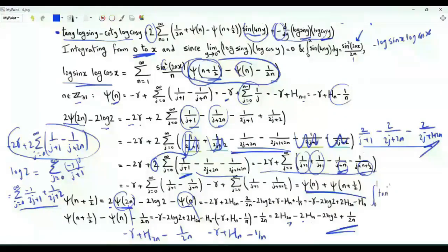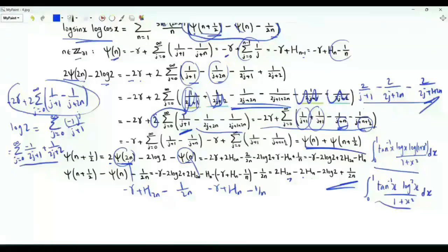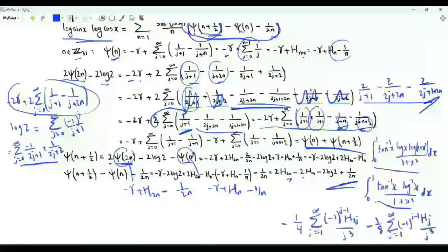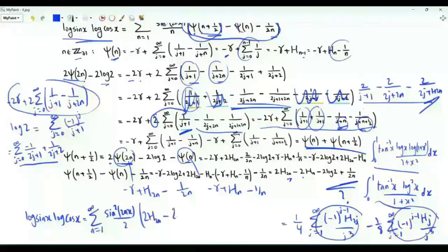Our main interest is the original integral. To obtain it we need to evaluate the integral from 0 to 1 of arctan(x)(log x)²/(1+x²), which is the difference between two scaled harmonic sums. We have already obtained one of these sums on the second page; we now need the other. We have also obtained the series representation for log sin(x) log cos(x) = Σ_{n≥1} (sin²(2nx)/n)(2H(2n) − 2H(n) − 2log2 + 1/(2n)).